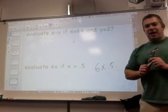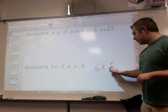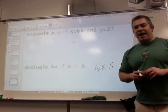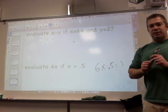And 6 times a half is basically what's half of 6. You might not be able to see that. And 6 times a half equals 3 because half of 6 is 3.